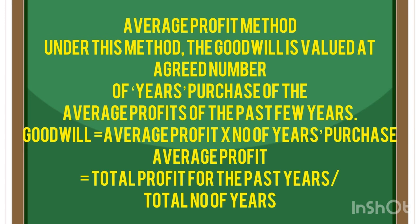Let's go to the Average Profit Method in this video. The average profit method is easy to do — if you are looking at it, you can do it. Just add and divide. Under this method, the goodwill is valued at an agreed number of years' purchase of the average profit of the past few years.